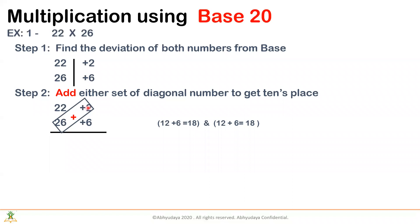As the same as the previous time, we just add diagonally. 26 plus 2 is 28. Here, I have to introduce one more step. Because the base is 20 and not 10, we have to multiply this particular number by 2. Why 2? Because 20 is 2 into 10. So you multiply it by 2, you get 56.